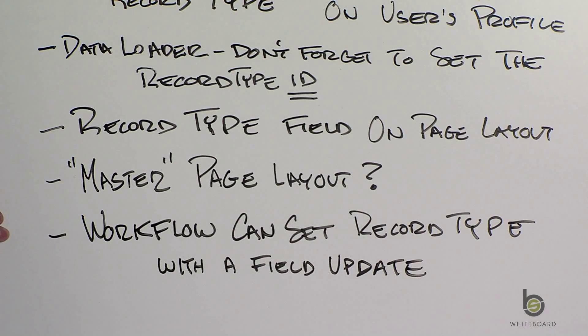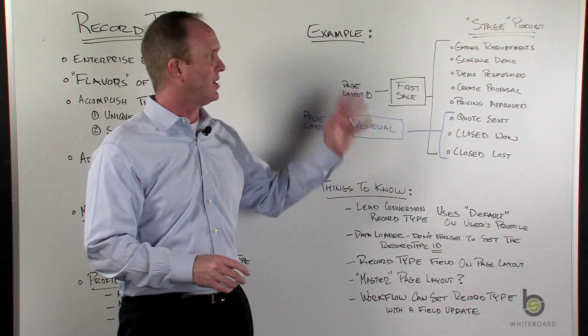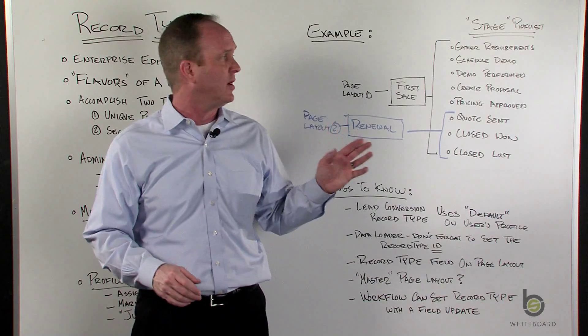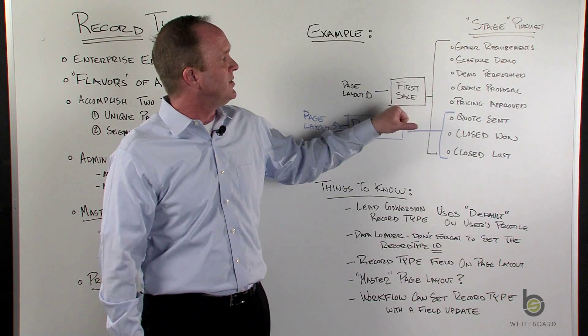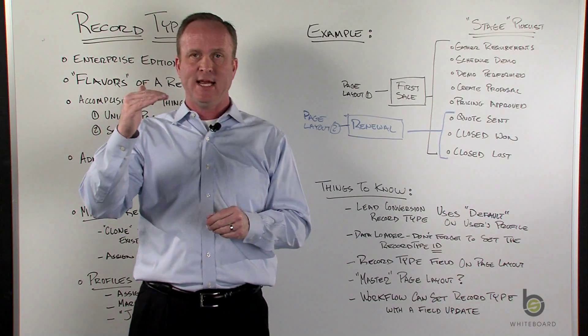One other last tip is workflow. So something you may not know is you can use workflow through a field update action to set the record type. So let me give you an interesting scenario. So let's say that we're going through our sales process that we talked about before, and maybe when you need to create the proposal or demo performed, when you get to that stage, you can have workflow fire, flip the record type.